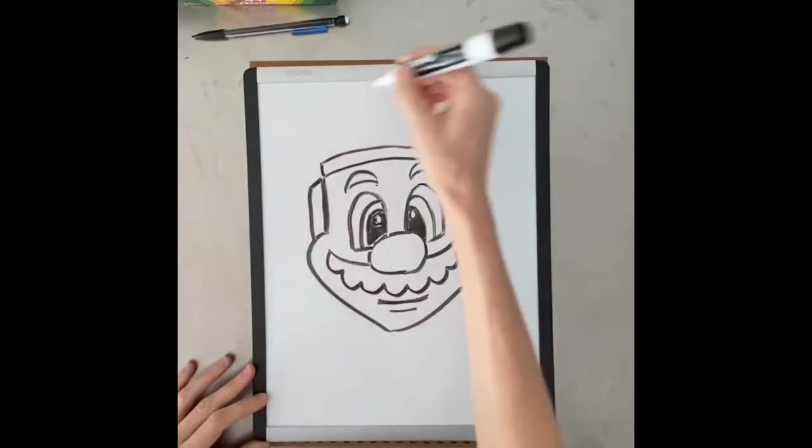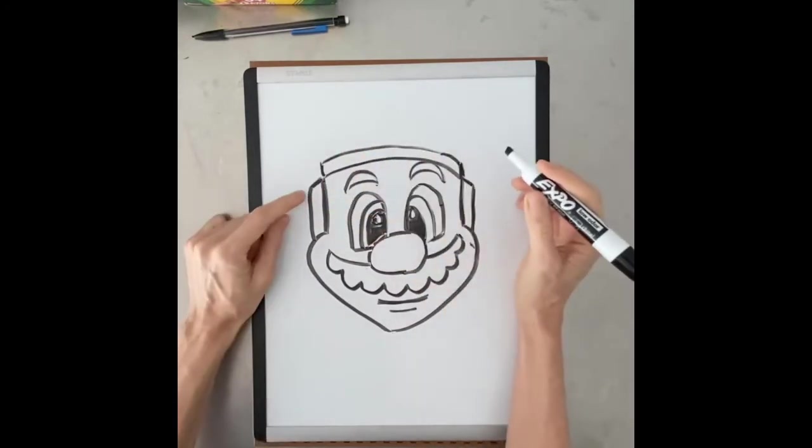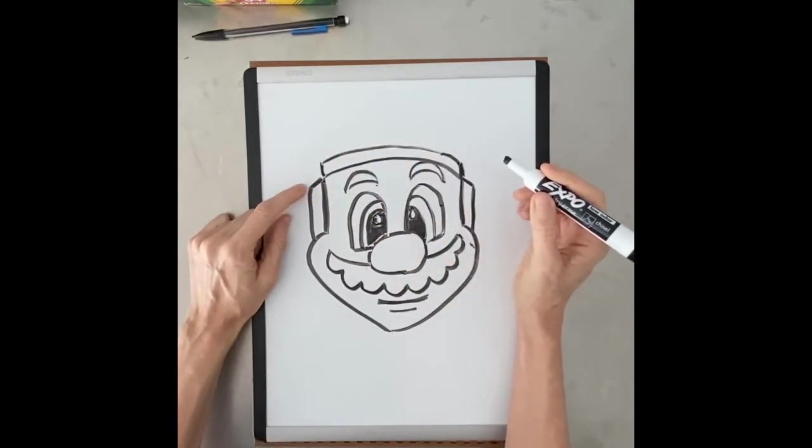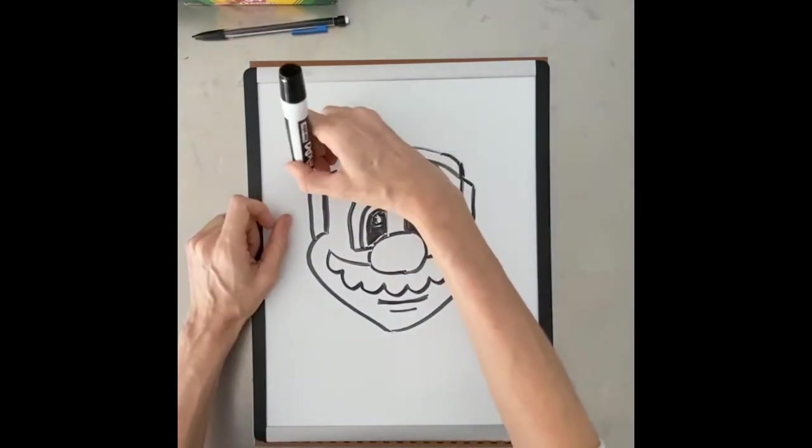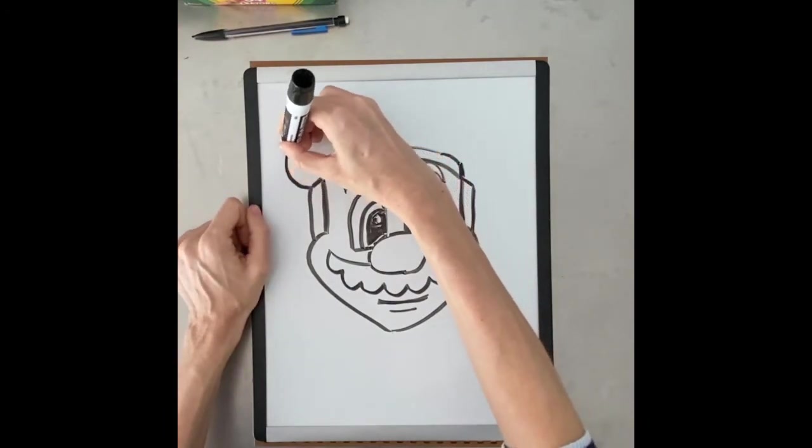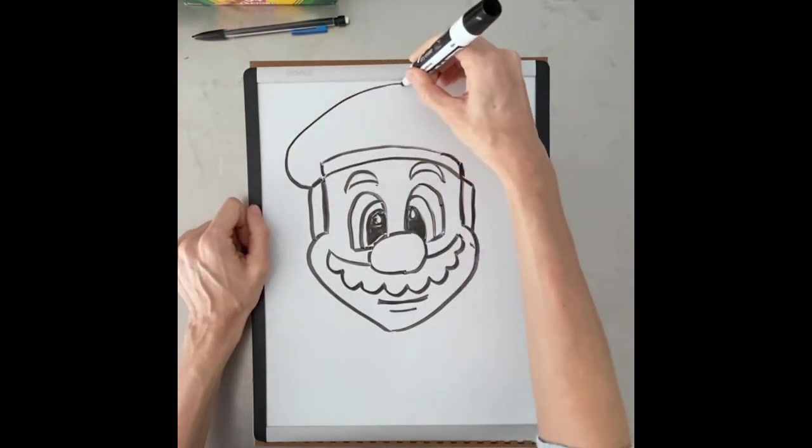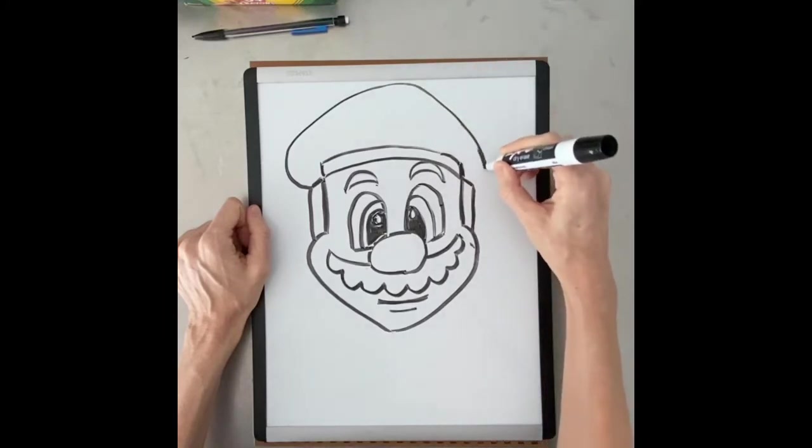From here we can add in the top of his hat. You're going to go where the top of the sideburn is, go out a little bit, curve up towards the top of your paper, and then bring it back down.